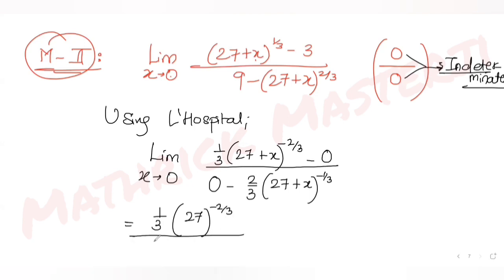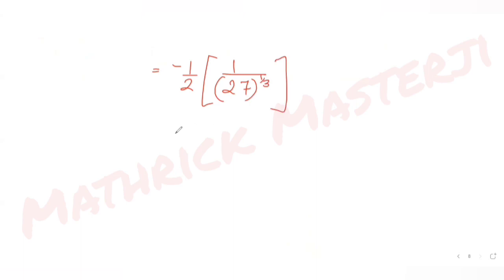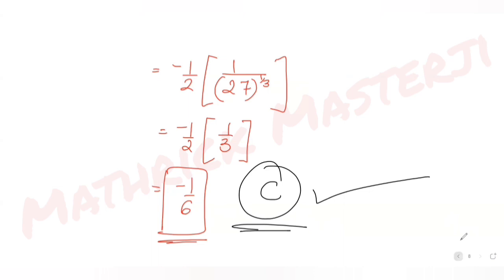Applying the limit x = 0: numerator gives (1/3)·27^(−2/3), denominator gives −(2/3)·27^(−1/3). Simplifying: the 3s cancel to give −(1/2)·27^(−2/3+1/3) = −(1/2)·27^(−1/3). Since 27^(1/3) = 3, this gives −1/(2·3) = −1/6. This again matches option C, confirming C is the correct answer.